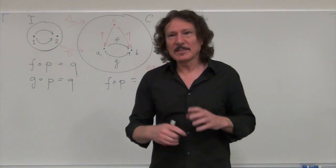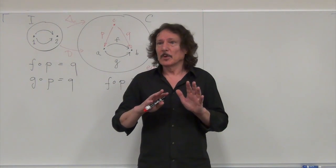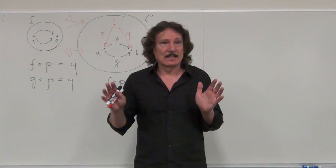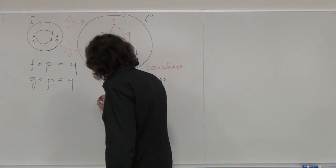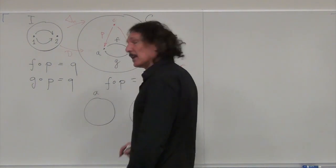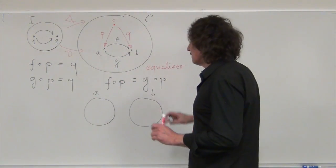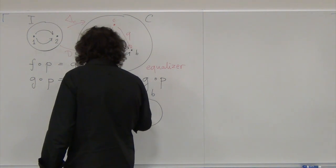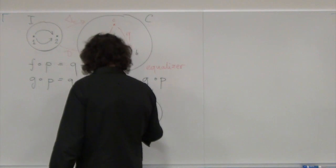To understand what an equalizer does, let's consider what it would do for sets. We have a set A and a set B. We have a function F going from A to B and a function G going from A to B. And we have a set C with a function P — a projection.